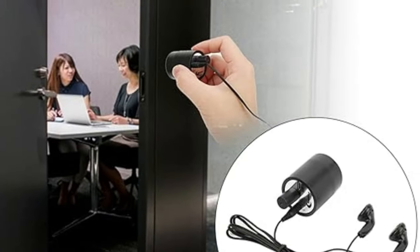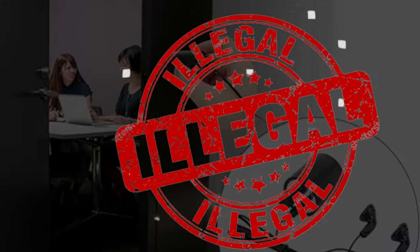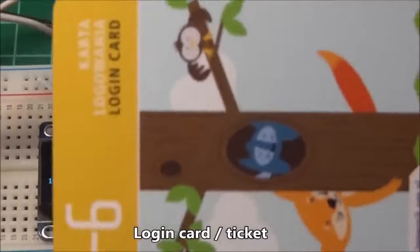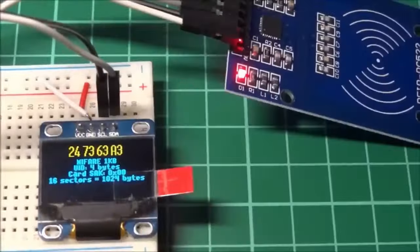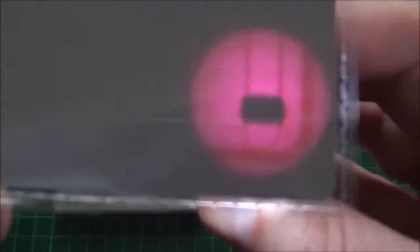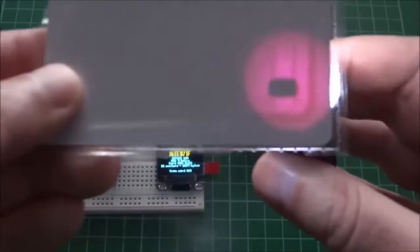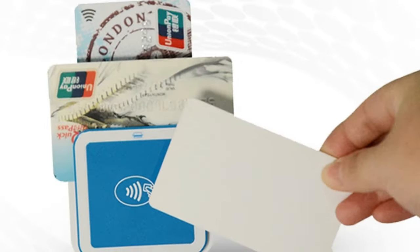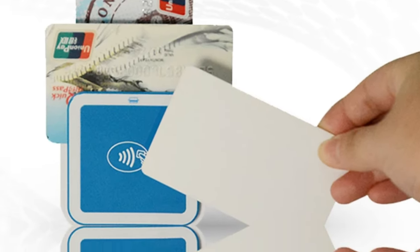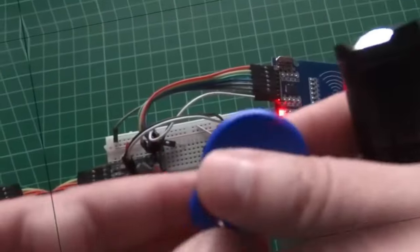In the realm of cyber threats, the RFID NFC skimmer emerges, targeting credit card information. Skimmers strategically place a card-skimming device on payment terminals to copy customer credit cards.